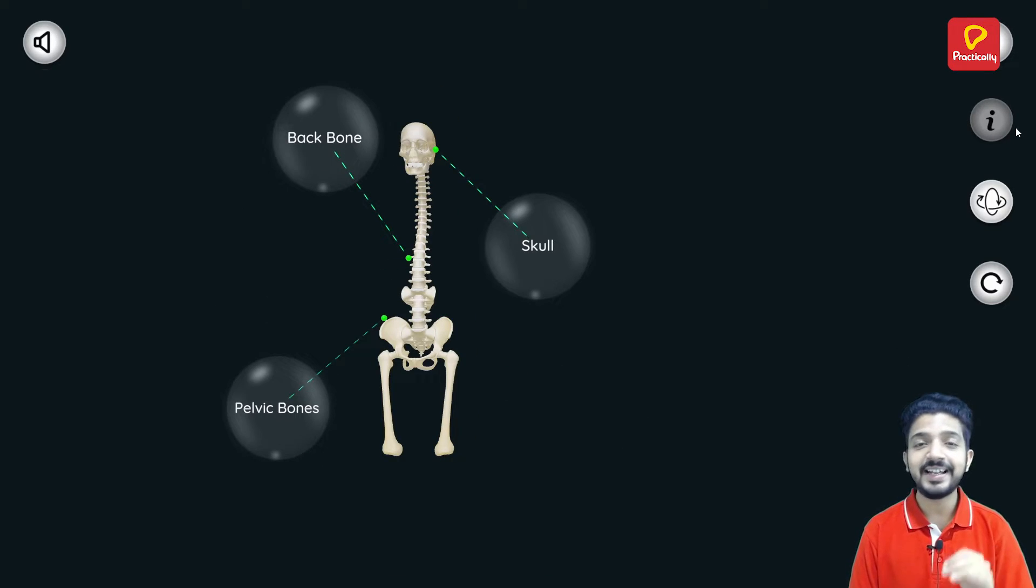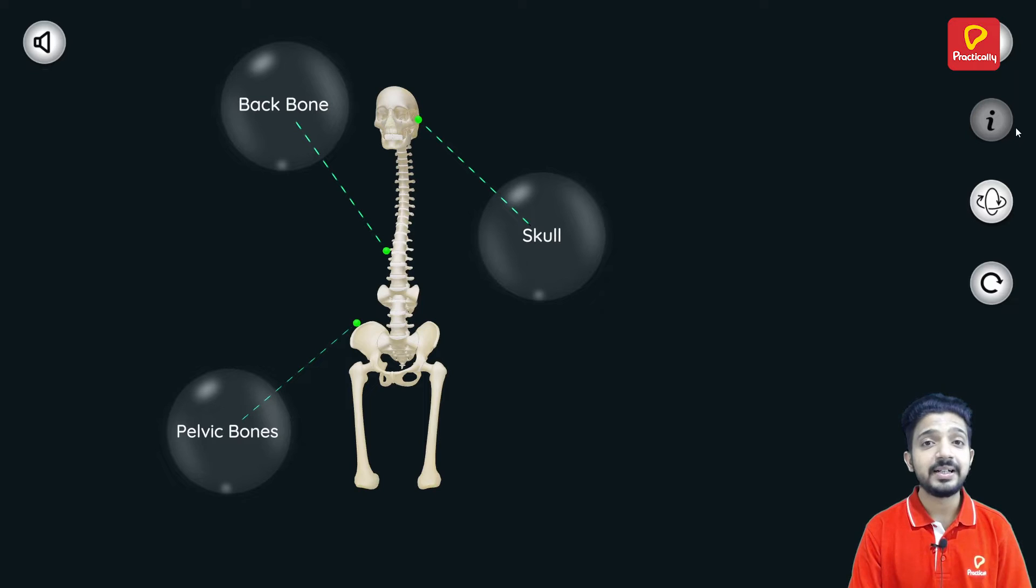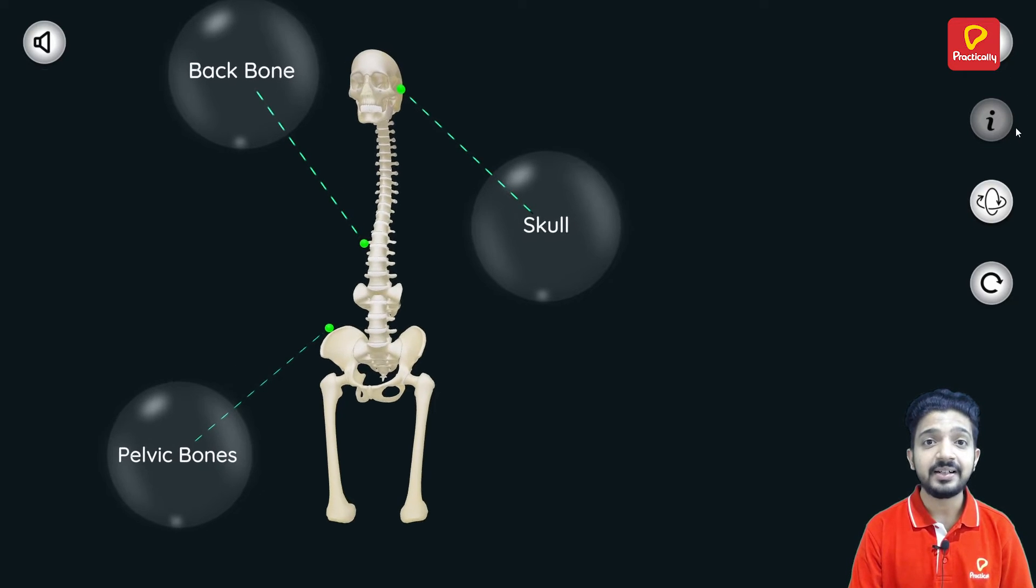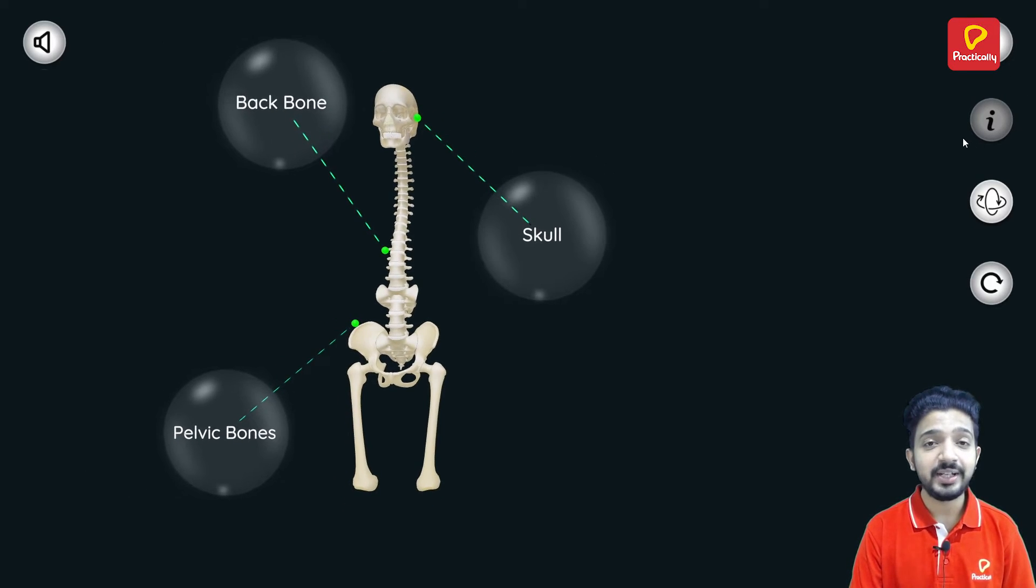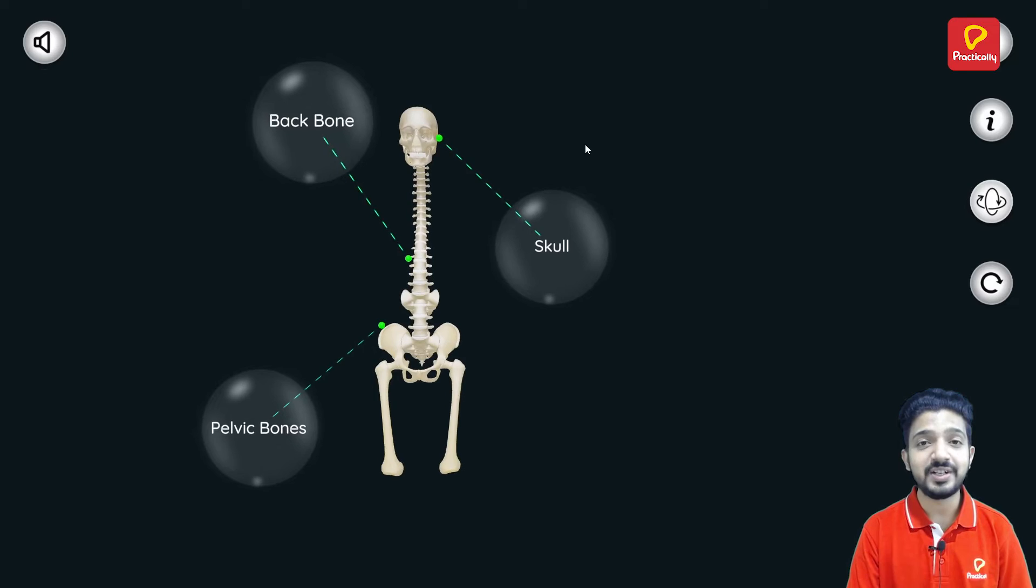Let's move on to the fourth and last type of joint, that is fixed joint. In these types of joints, the movement is restricted. So we have certain bone connections in our body which can't move, and again we have Mr. Boney showing the different fixed joints in our body.